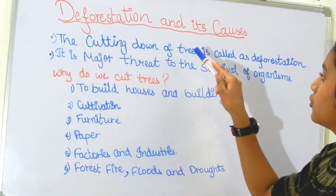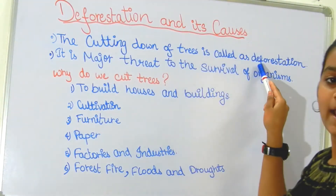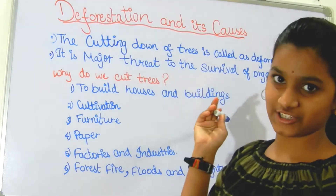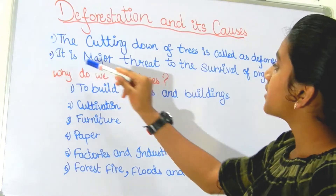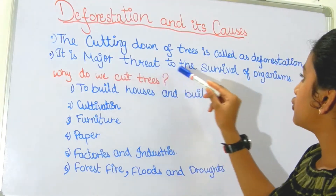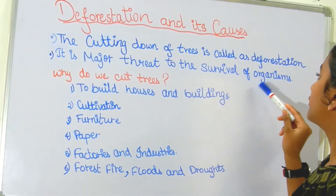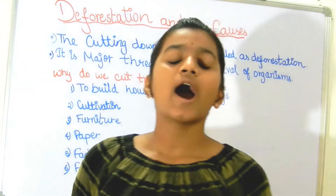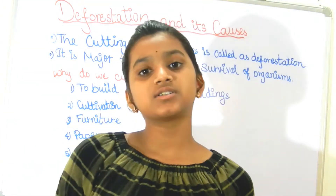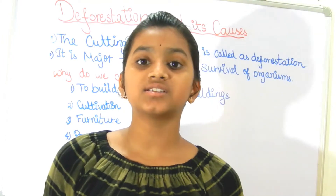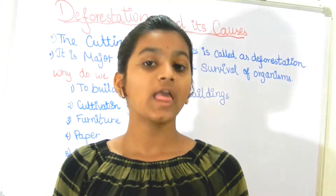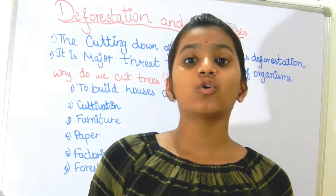The cutting down of trees is called deforestation. It is a major threat to the survival of organisms. So how is it a major threat to the survival of organisms due to deforestation?